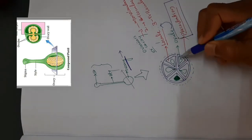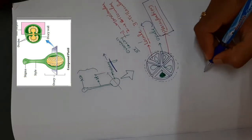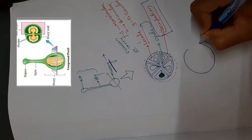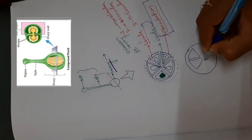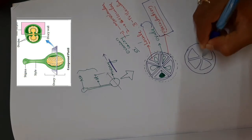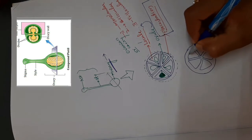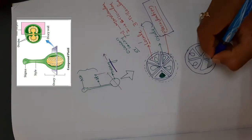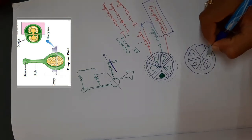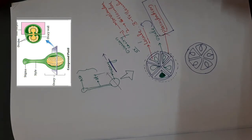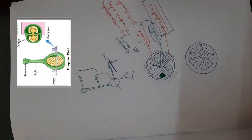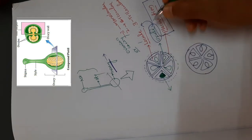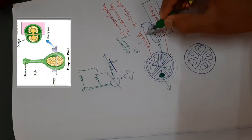For example, this is the pattern of axile placentation — just a rough diagram. These are the locules; you can see the presence of ovules arranged in a particular pattern. Each different pattern of arrangement is a different placentation. This is all about the ovary. Now we will focus on the ovule, the small structure which is present in the ovarian cavity or locule.